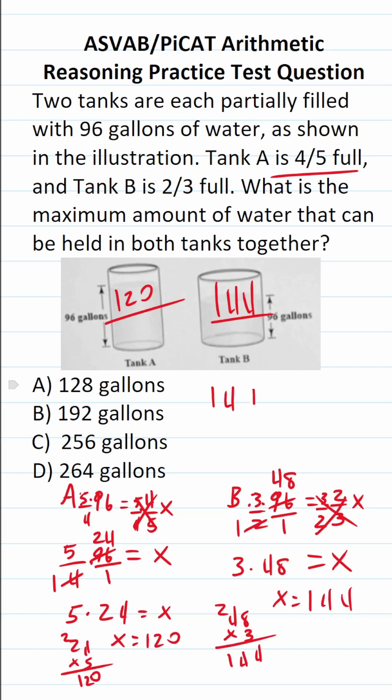How much water can they hold together? Well, we have 144 plus 120. This is 4, 6, 2. So they can hold 264 gallons of water together.